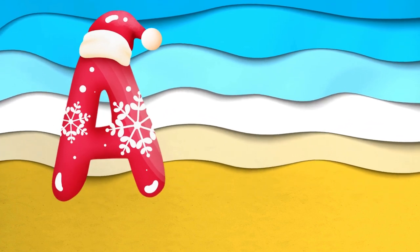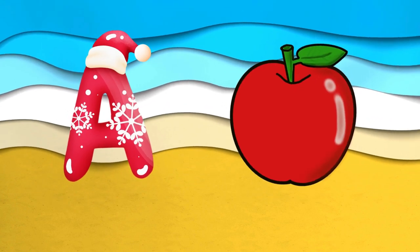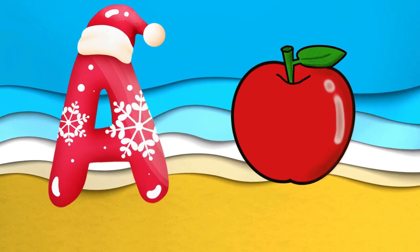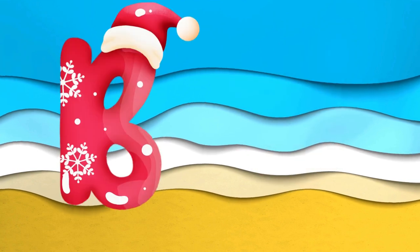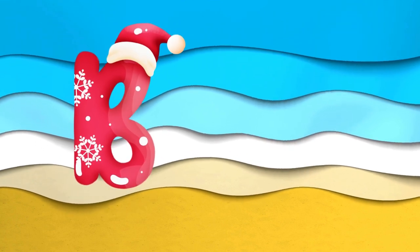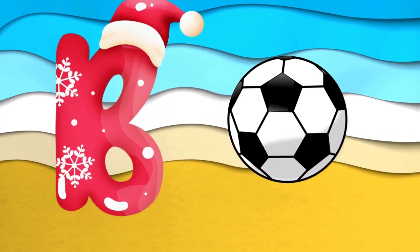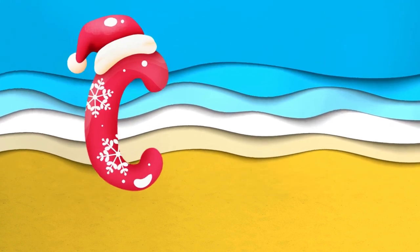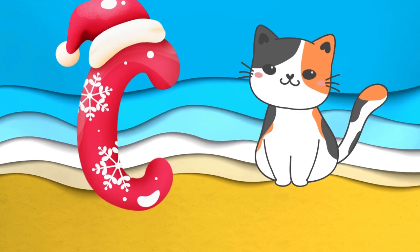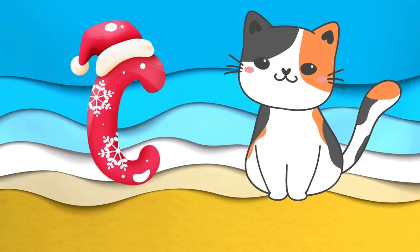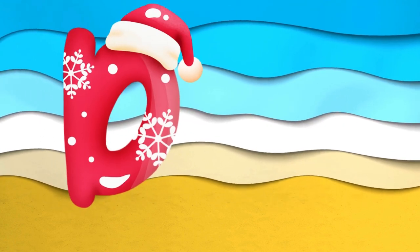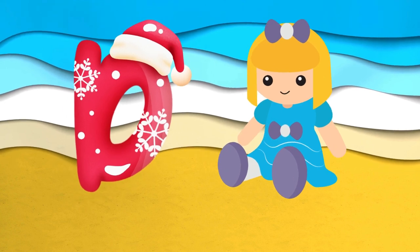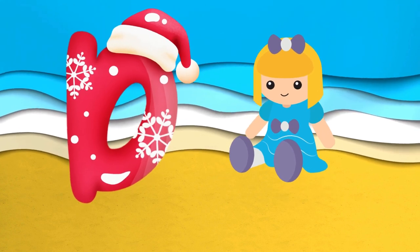A is for apple, a-a-apple. B is for ball, b-b-ball. Z is for cat, c-c-cat. D is for doll, d-d-doll.